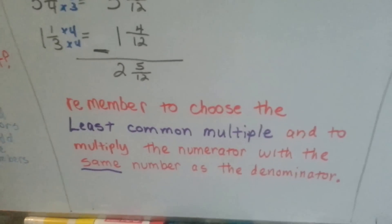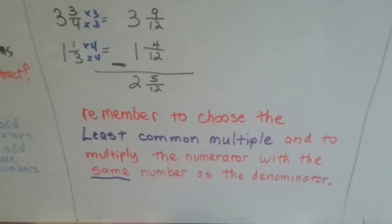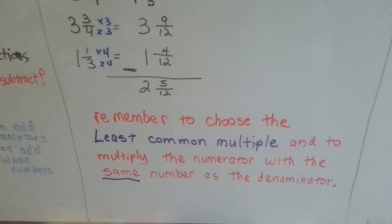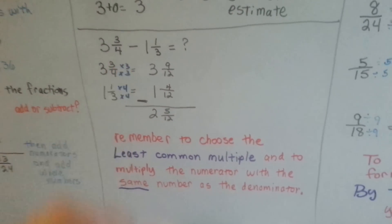So remember to choose the least common multiple when you're matching denominators and to multiply the numerator with the same number as the denominator because it gets jealous. We don't want to create any fights between our fractions, do we?